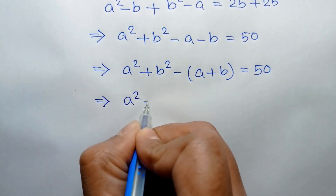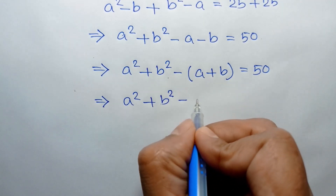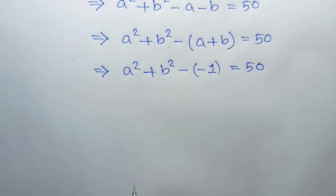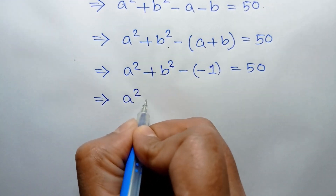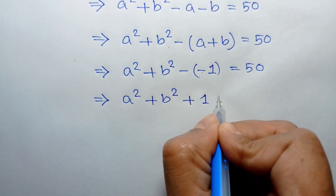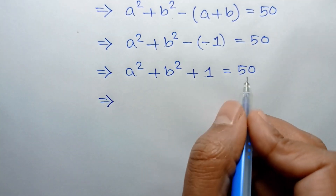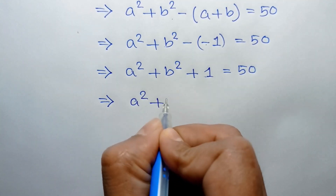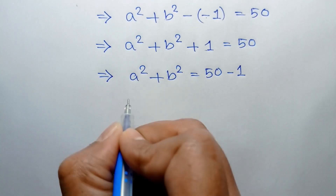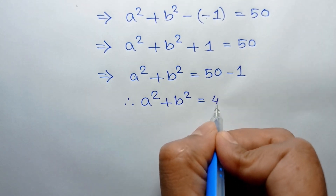This gives us A squared plus B squared minus A plus B is equal to 50. Substituting A plus B equals negative 1, we get A squared plus B squared minus negative 1 equals 50, so A squared plus B squared plus 1 equals 50. Taking 1 to the right side, A squared plus B squared is equal to 50 minus 1, which is 49.